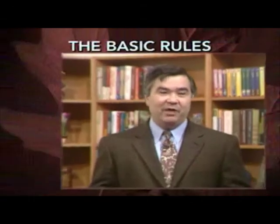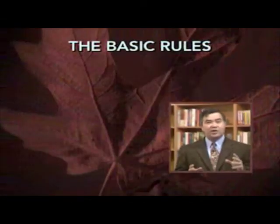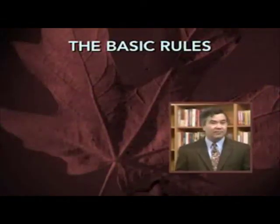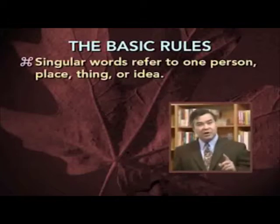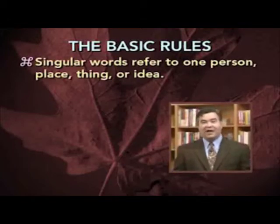The first kind of agreement that's important for you to understand is agreement between subjects and verbs. And when we're dealing with subjects and verbs, the most important kind of agreement has to do with singular and plural. Let's start with the basic rules for understanding this kind of agreement. First, what do singular and plural refer to? Singular words refer to one person, place, thing, or idea.